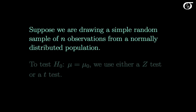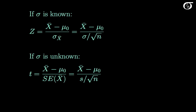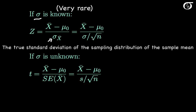Suppose we are drawing a simple random sample of n observations from a normally distributed population. To test the null hypothesis that mu is equal to mu0, we're going to use either a z-test or a t-test. The choice of appropriate test statistic boils down to whether the population standard deviation sigma is known or not. If sigma is known, which is going to be very rare in reality, then we would use a z-test. The sigma x-bar, which is simply sigma over the square root of n, is the true standard deviation of the sampling distribution of x-bar.